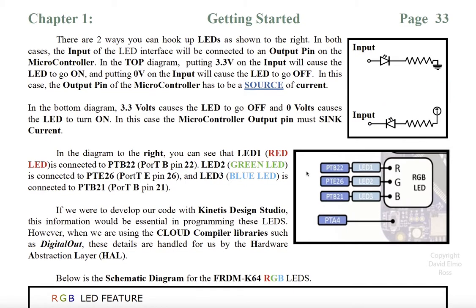Now, on the microcontroller, there's a number of ports. There's port A, port B, port C, and so forth. And each one of these ports has 32 pins associated with it. If we take a look here, we have PTB22, or port B pin 22, connected to our red LED. We have port E pin 26 connected to our green LED, and port B pin 21 connected to our blue LED.